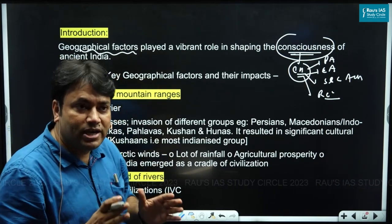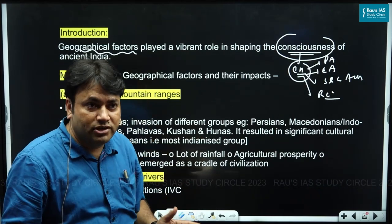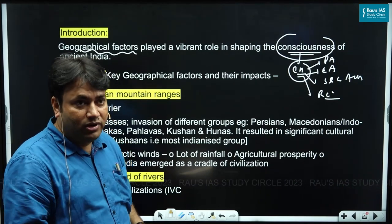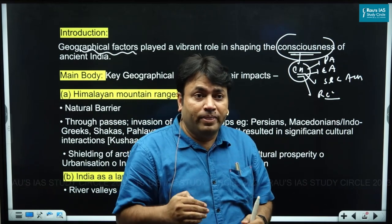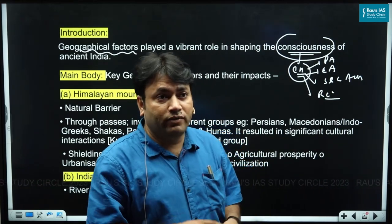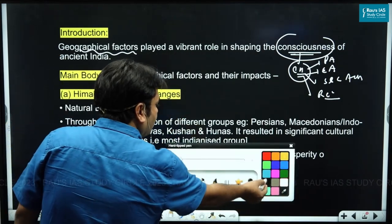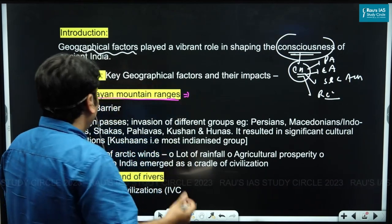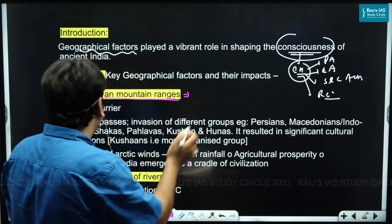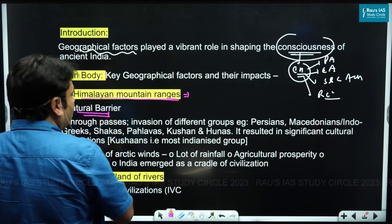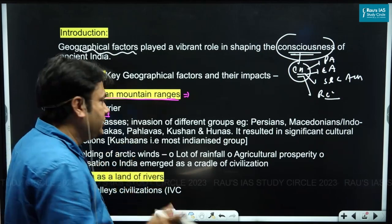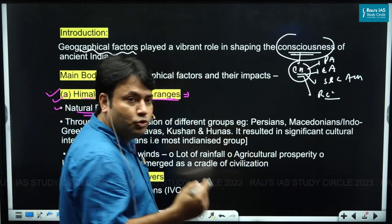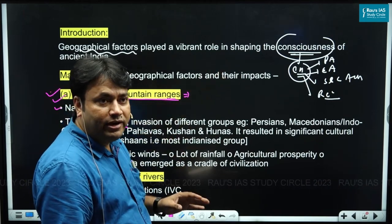In the main body of the answer, since we cannot write a lot, the best approach is to present points in bullet format — indicative in nature, with no scope for full description. The first point is the Himalayan mountain ranges, which played a very important role in shaping the history of India by acting as a natural barrier, with different passes through which foreign groups invaded India.